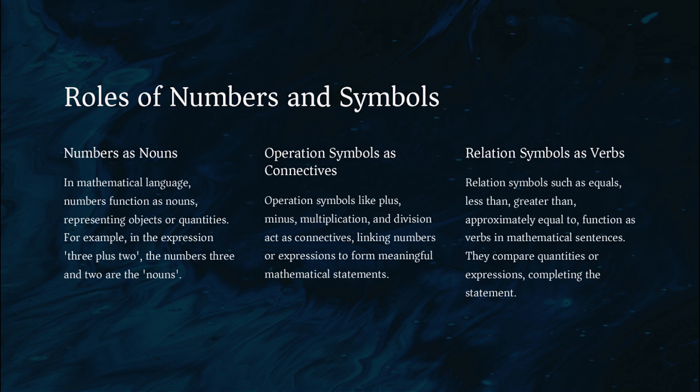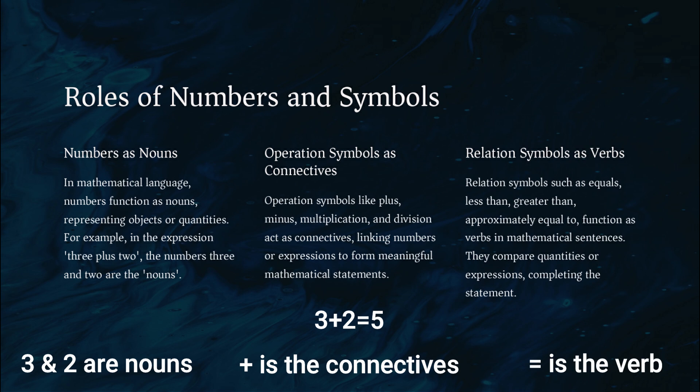For instance, in the sentence 3 plus 2 equals 5, the numbers 3 and 2 are nouns, the plus is the connective, and equals is the verb.